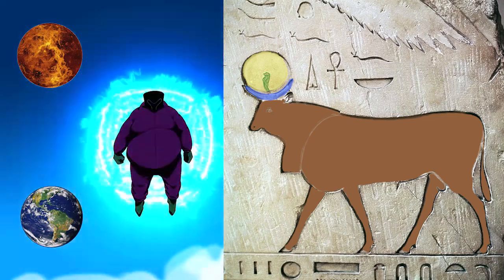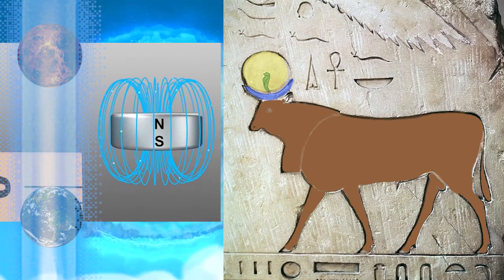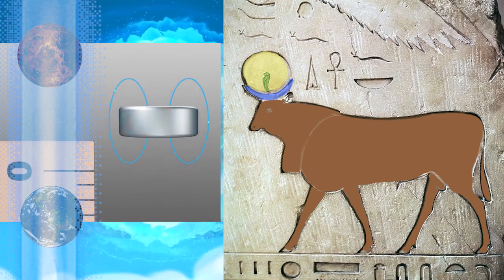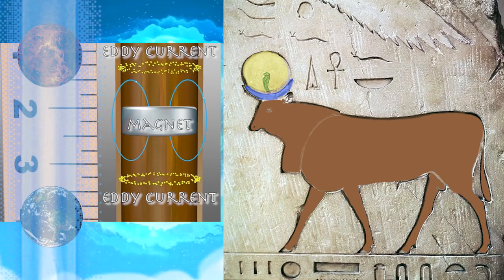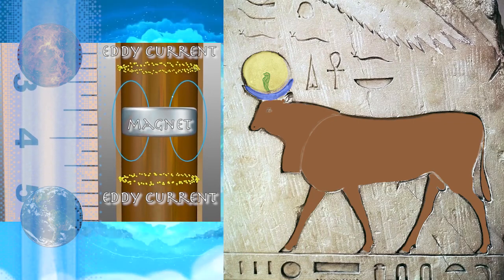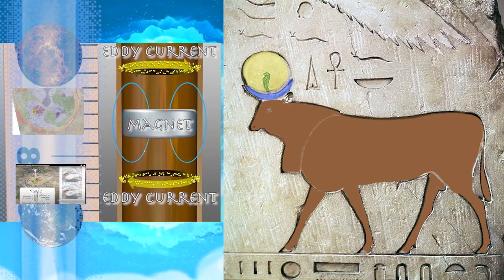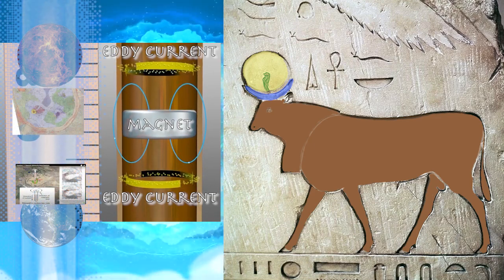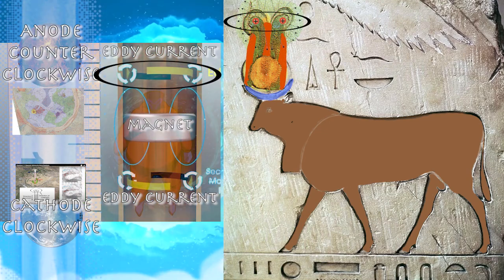Because Venus and the Earth resided inside the primary Birkeland current, Venus' descent acted like a magnet in a copper tube, as seen here. This animation is showing what are called eddy currents — currents induced by a magnet moving in a tube that rotate clockwise in the north and counterclockwise in the south. The counterclockwise rotation of the southern hemisphere is in the same orientation as the current rotation found in the Tarim Basin. Venus represented a positive charge with eddy currents at the poles.